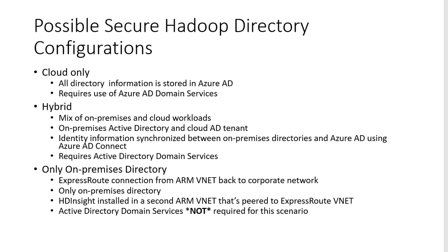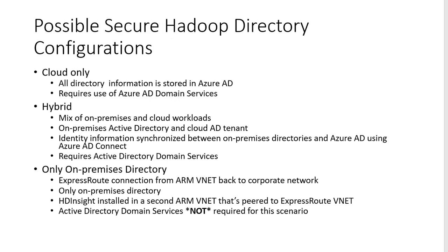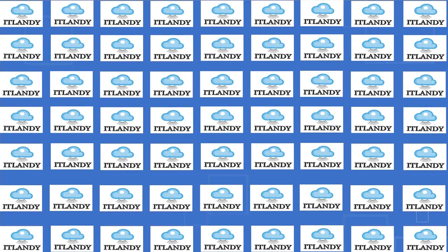The last scenario is on-premise directory only. This is purely on-premise — we use an ARM template and VNet with ExpressRoute. HDInsight is installed in what we can call a data center, and you can use ExpressRoute to connect. Active Directory Domain Services is not required for this scenario because you are independent at the component level. Next, we will deep dive into Hadoop security with technical analysis and introduction. Thank you for watching.